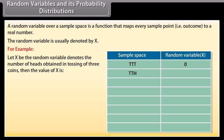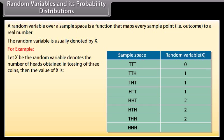For TTH, the value is 1. For THT, the value is 1. For HTT, the value is 1. For HHT, the value is 2. For HTH, the value is 2. For THH, the value is 2. For HHH, the value is 3.